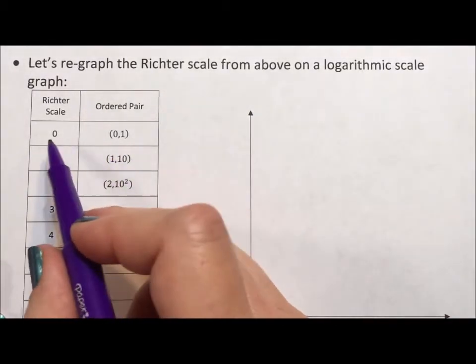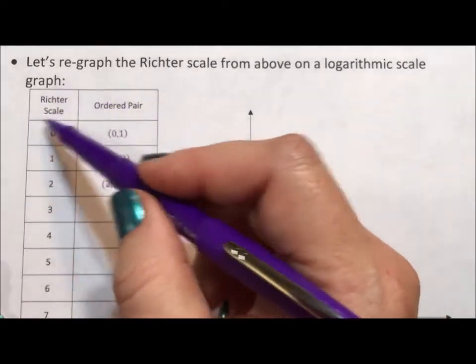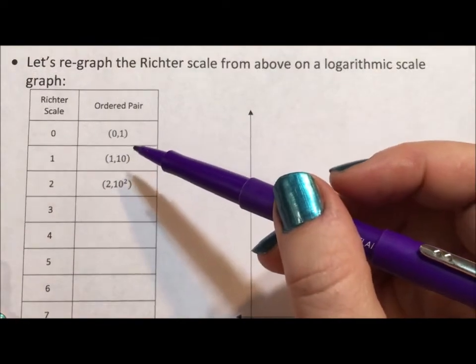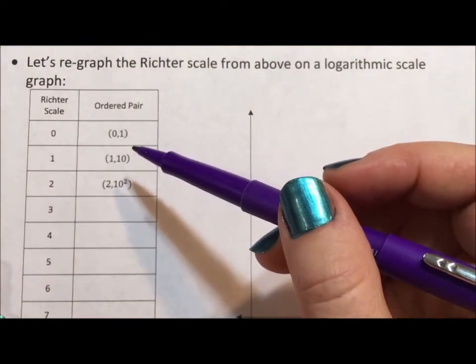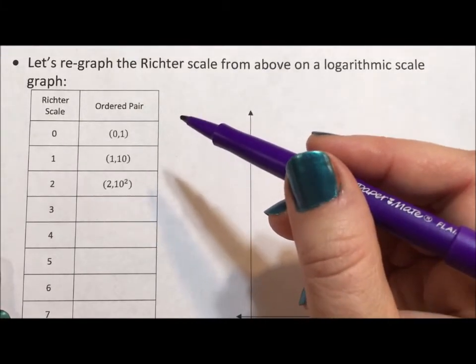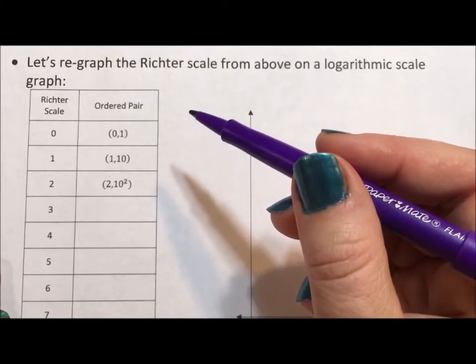So what I want to do is I'm using Richter scale because it's the most common application. Every jump on the Richter scale is a power, an exponent of 10, so something that rates a 4 on the Richter scale is 10 to the 4 in strength.